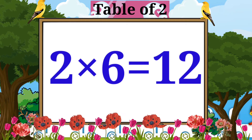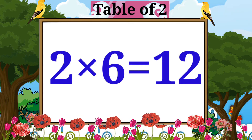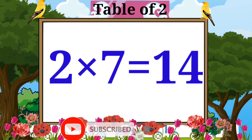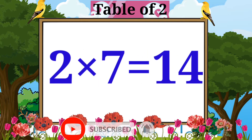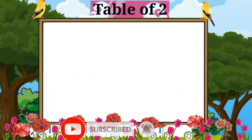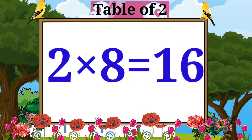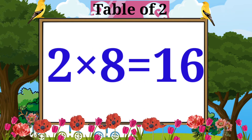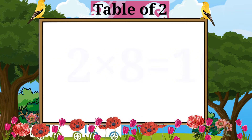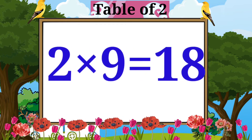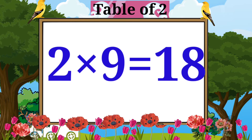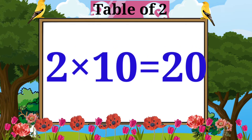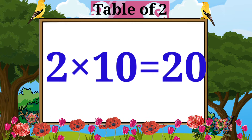Two sixes are twelve. Two sevens are fourteen. Two eights are sixteen. Two nines are eighteen. Two tens are twenty.